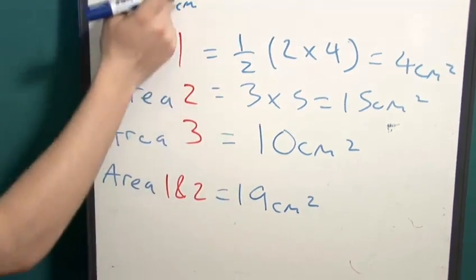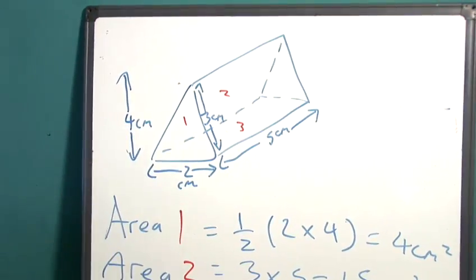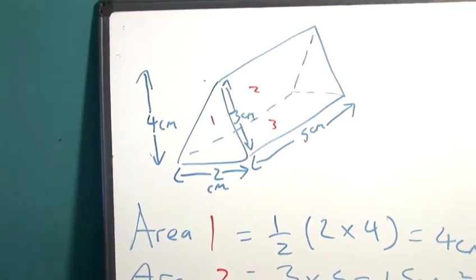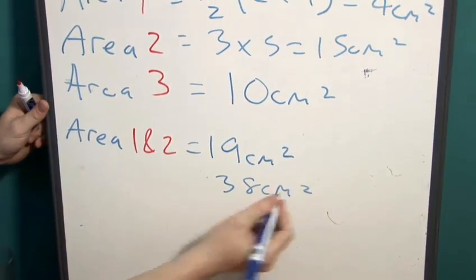We know that if we multiply this by two, because there are two of each face, we get the surface area of all that combined. This gives us thirty-eight centimetres squared.